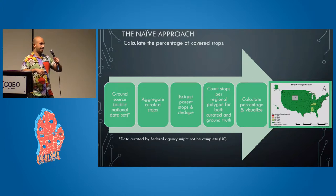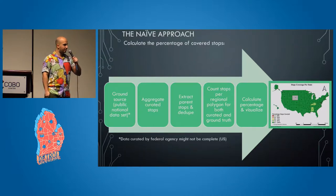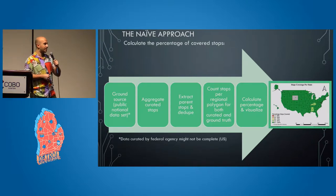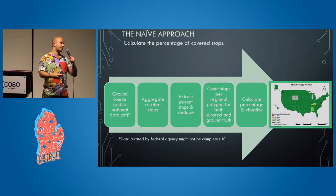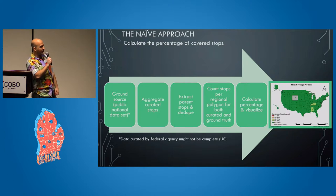You get a source of all the stops as your ground truth — there are public national datasets from agencies like the National Department of Transportation. You aggregate the stops and make sure to dedupe parent and child stops. If you think of a station like Grand Central, there'll be lots of smaller stations inside, so you clean up that data, count the stops you have, count the stops the ground truth has, calculate the percentages, and make a map. When we look at the map for the U.S., it looks really good — it's all green. So it seems like we're done.